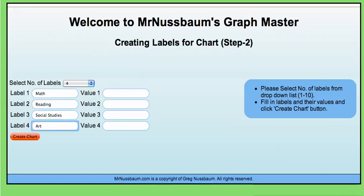Let's say I had a class of 30 students and 11 of them chose math, 7 chose reading, 8 chose social studies. So that leaves me with 4 who chose art. Then I click create chart.